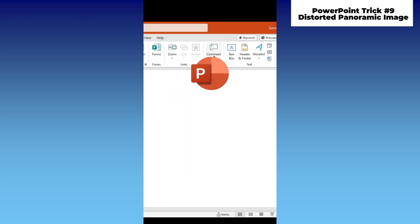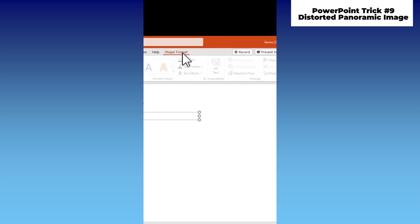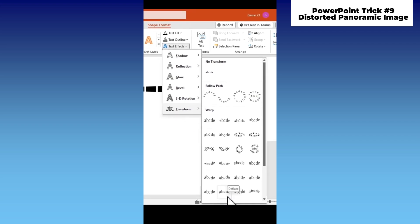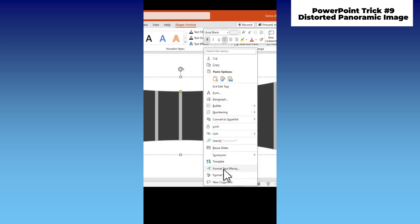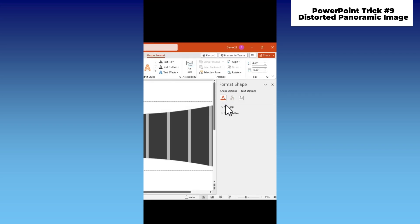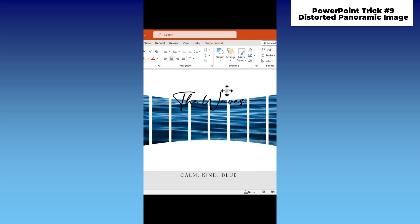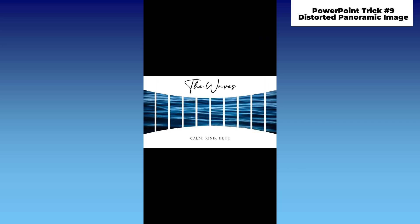Here's a PowerPoint trick. First, insert a text box and type the minus sign ten times. Select all of them and go to Shape Format. Click on Text Effects, then Transform, and choose the Deflate option. Next, resize the text box on the slide. Right-click the selected lines and choose Format Text Effects. Under Text Options and Text Fill, select Picture or Texture Fill. Finally, add your text and boom! Follow for more cool PowerPoint tutorials.